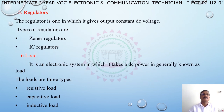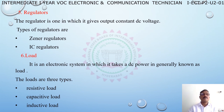Fifth block: regulator. The regulator gives a constant DC voltage output. Types of regulators are Zener regulator and IC regulators. The regulator keeps the output constant and limits fluctuations.